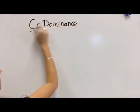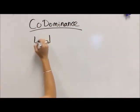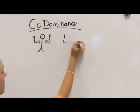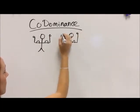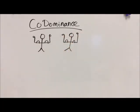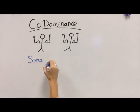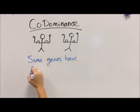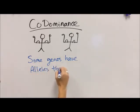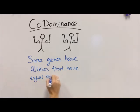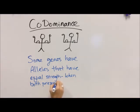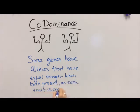Another special case of inheritance is called co-dominance. We talked about dominance as being strength, and certain genes are stronger than others. In the case of co-dominance, some genes have alleles that have equal strength to each other. So instead of just having a dominant and recessive situation, we have two dominant alleles that are co-dominant, and when you have one of each, they give us an extra trait above and beyond the classic dominant and recessive.